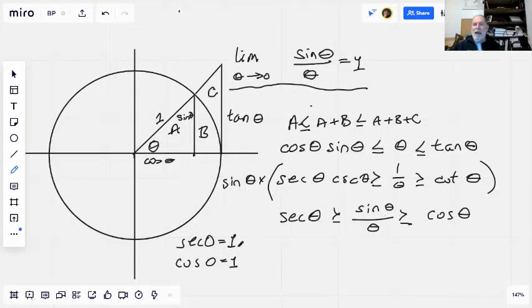So as these get closer to being 1, this expression's got nowhere to go. So its only choice is to be equal to 1,